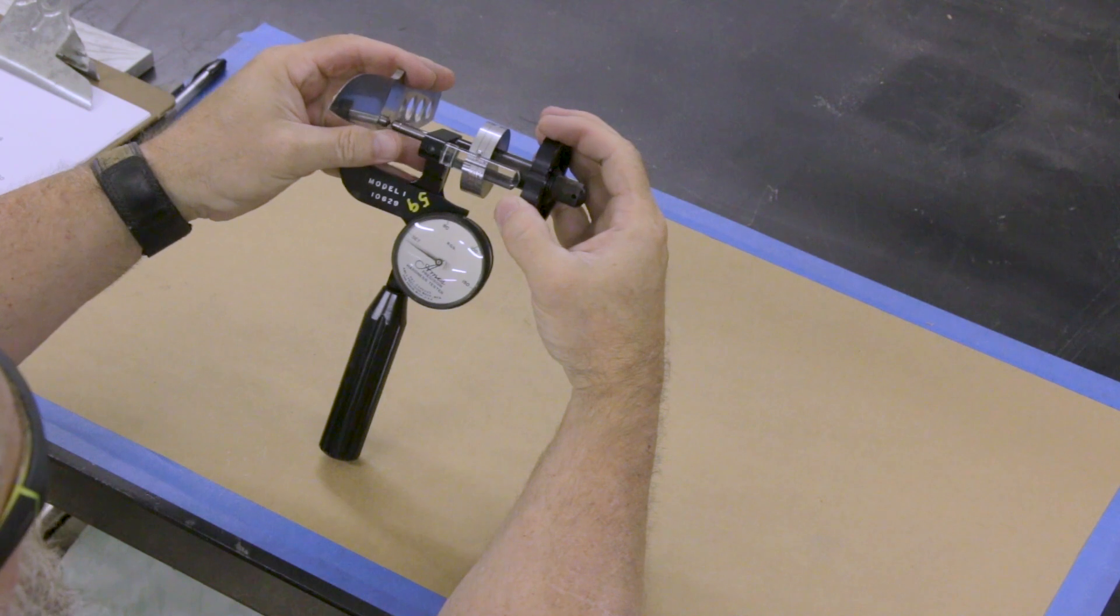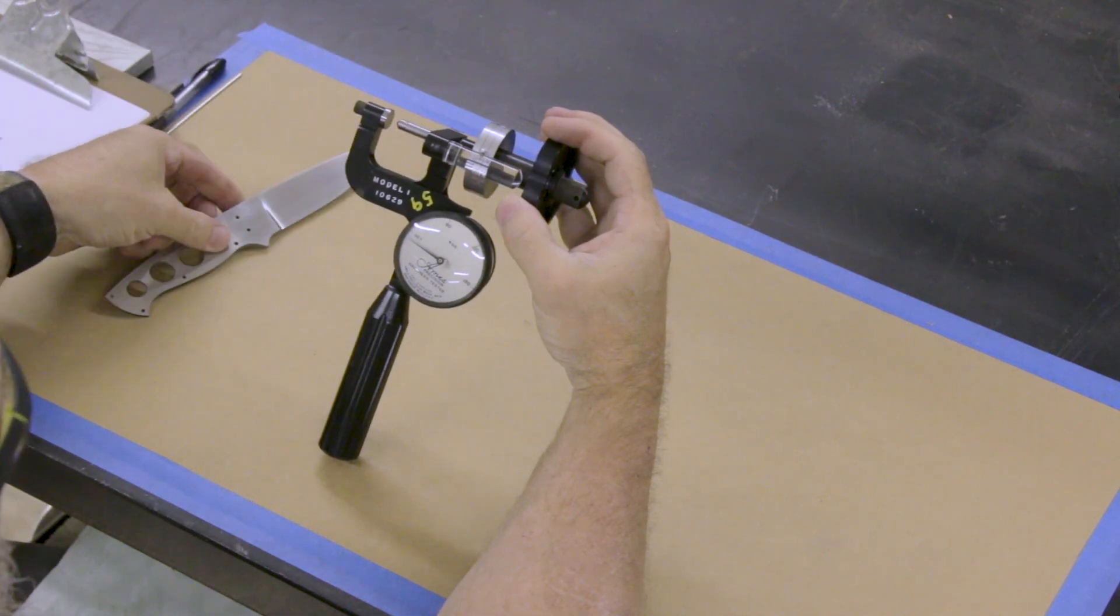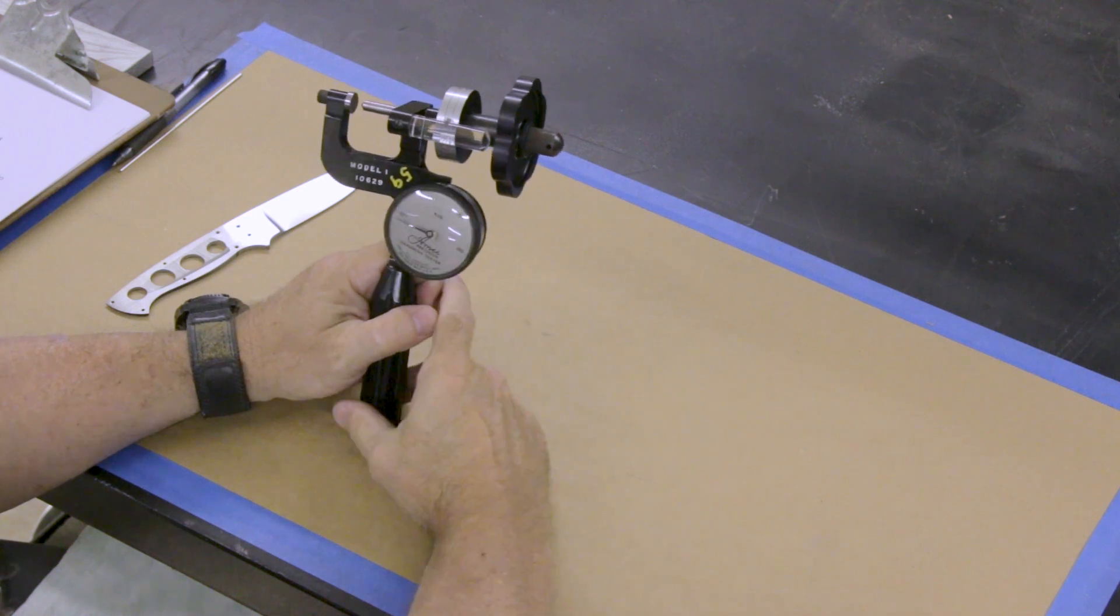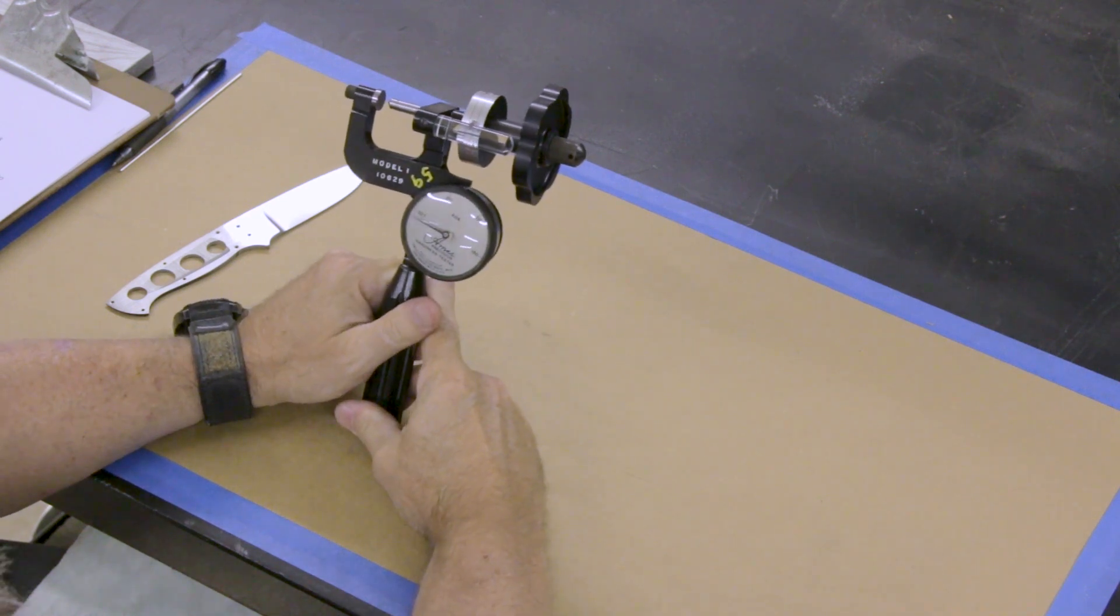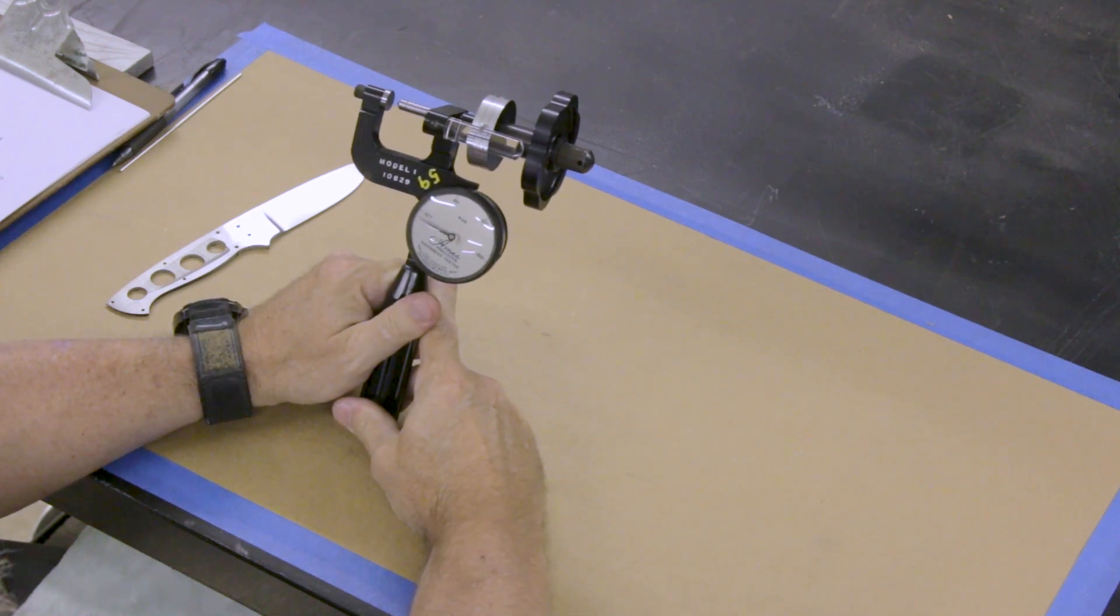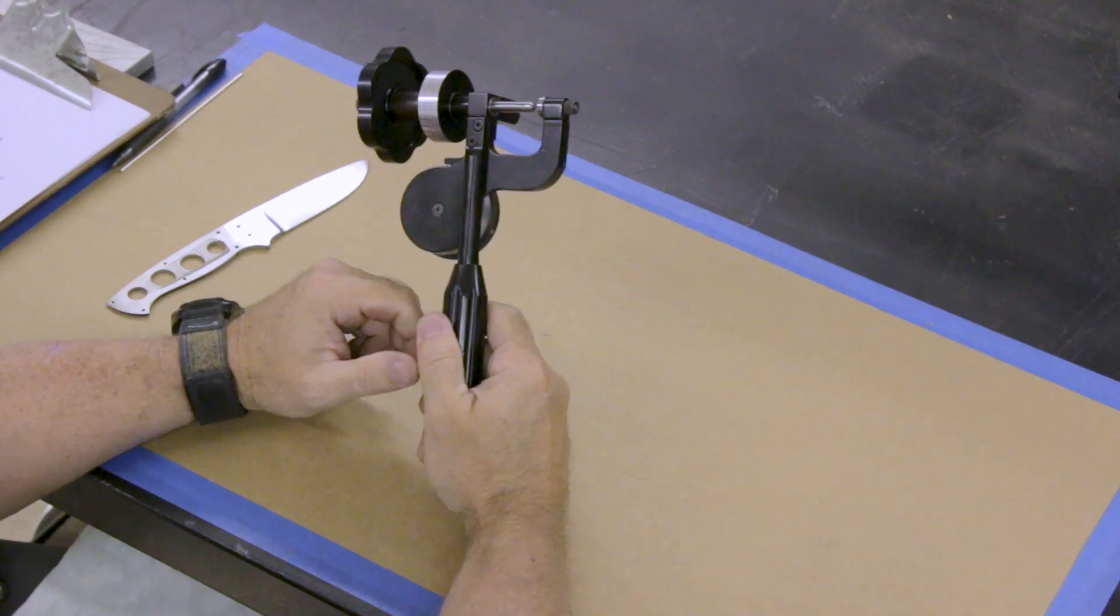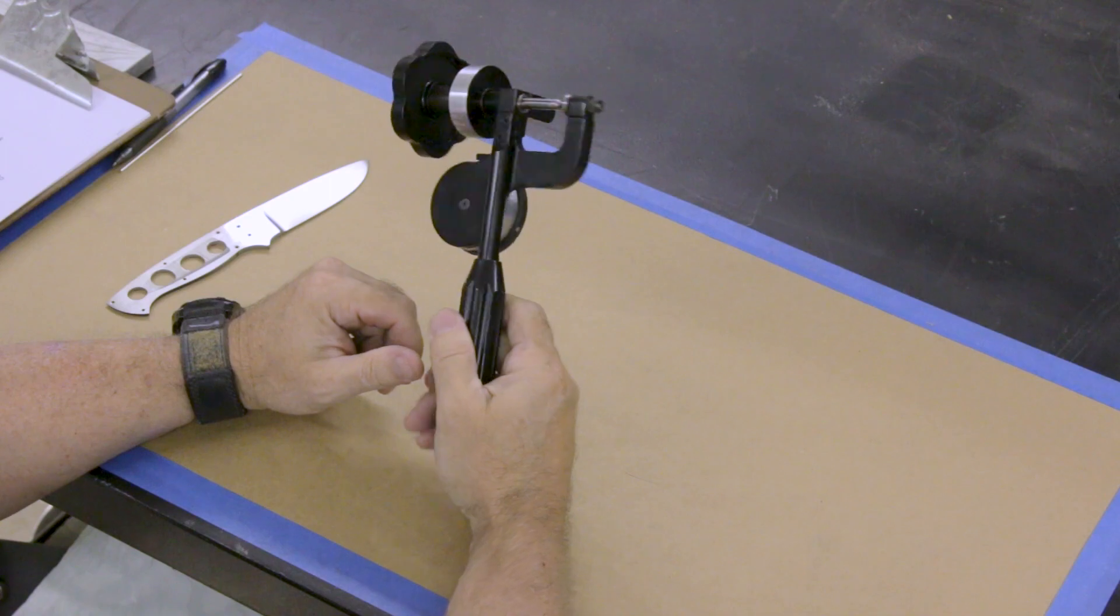And I've got 60 again. So two readings of the same. I'll call that good. I know that this blade, I'm adding those two. So I know this blade is at 62 Rockwell C scale. And that is, that's it on the Ames Hardness Tester. That's how it works.